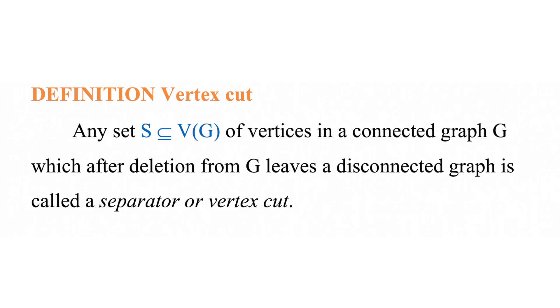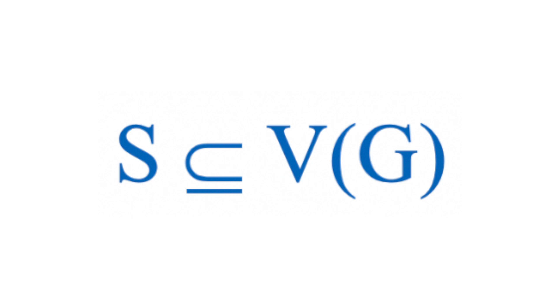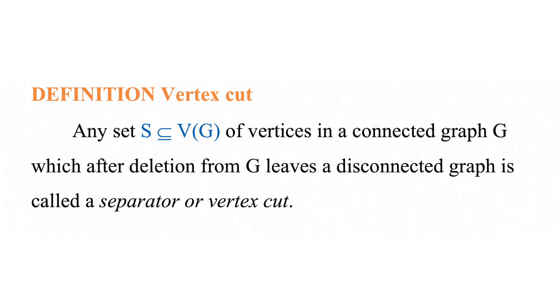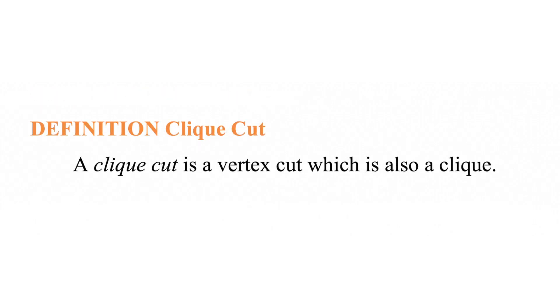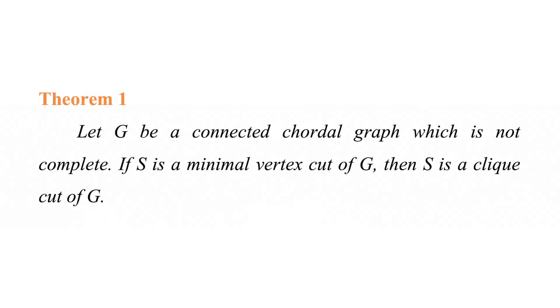Note: it is very clear from the above proposition that if we delete any vertex from a chordal graph, the resulting graph is again a chordal graph. Now let us see the definition of a vertex cut. A vertex cut is a subset S of V(G) in a connected graph G which, after deletion from G, leaves a disconnected graph — it is called a separator or vertex cut. A clique cut is a vertex cut which is also a clique.